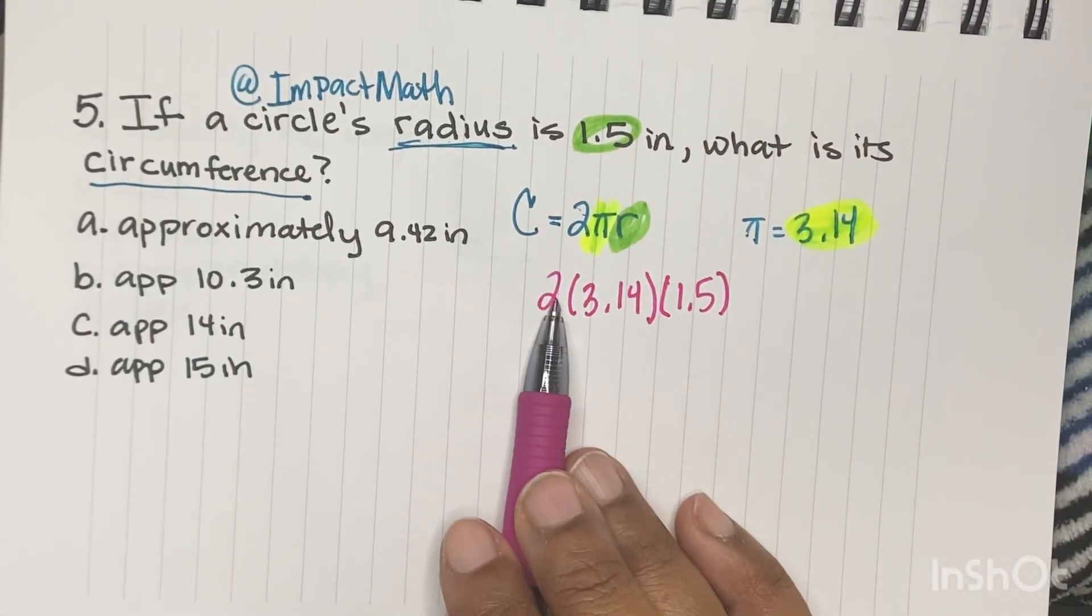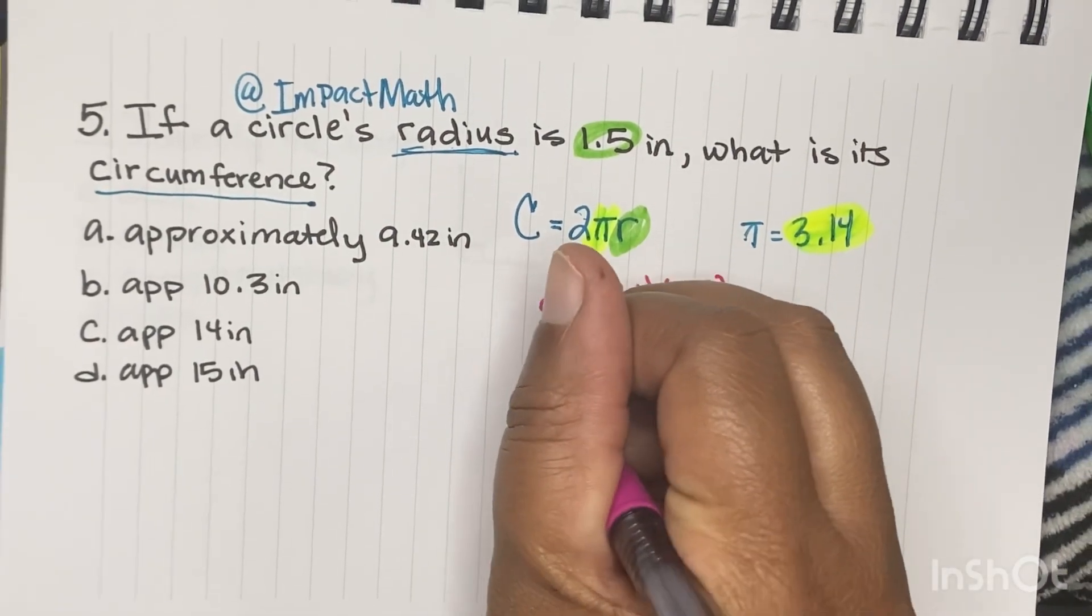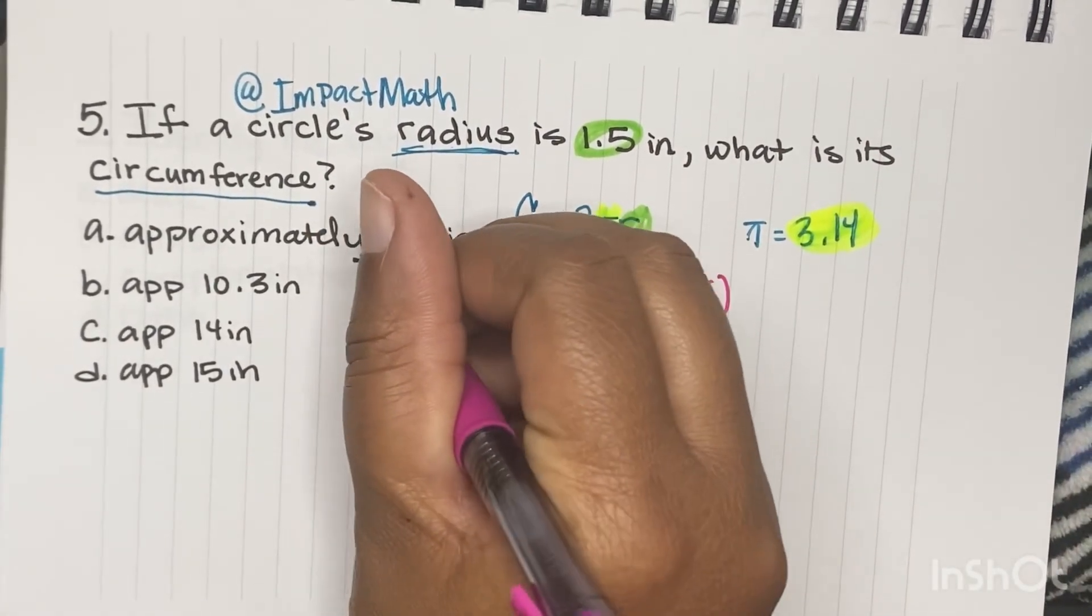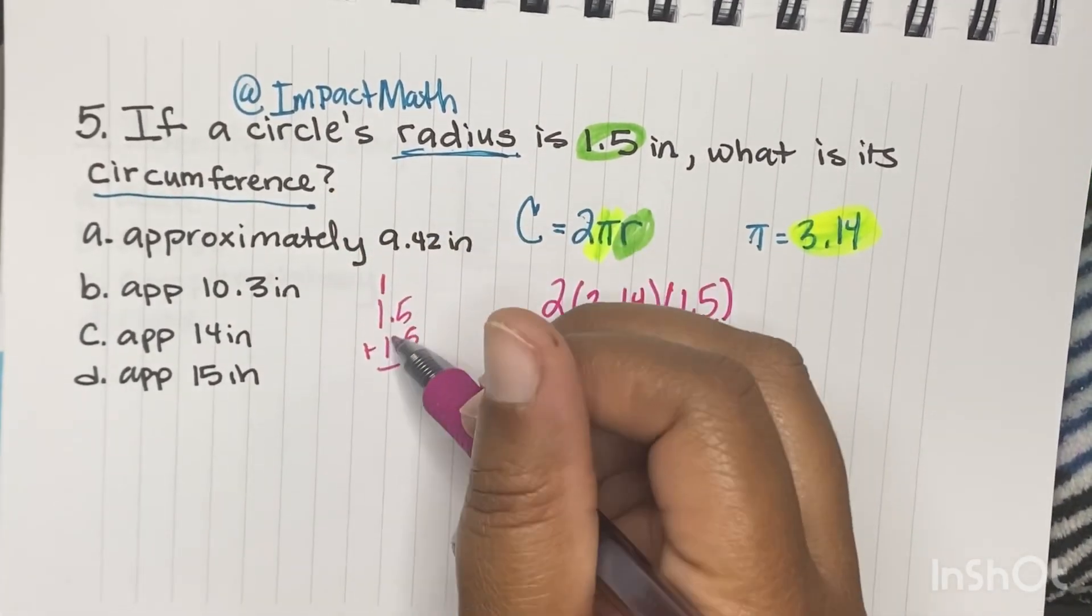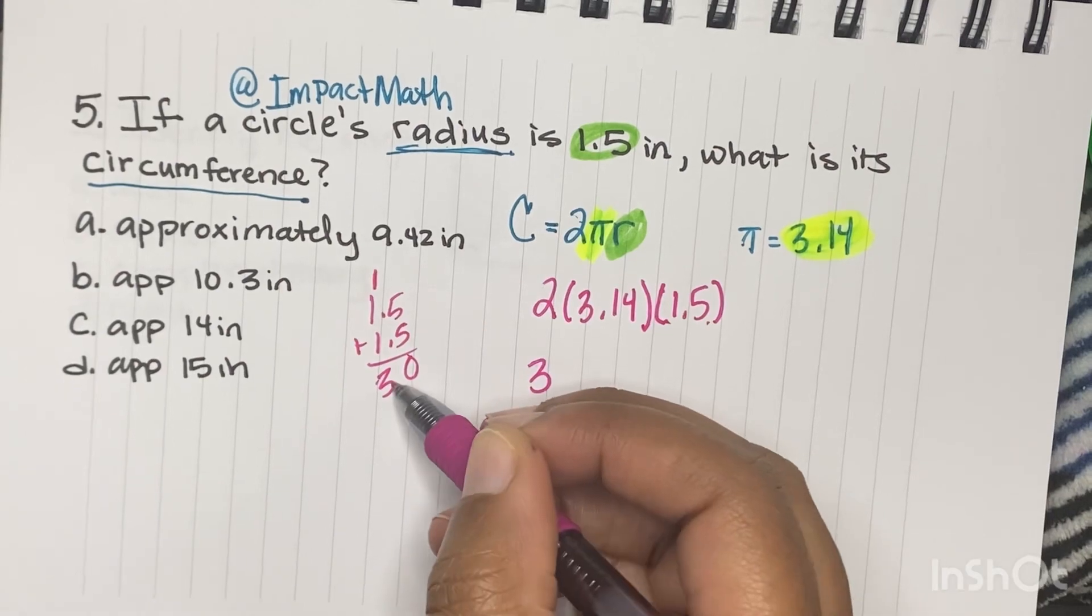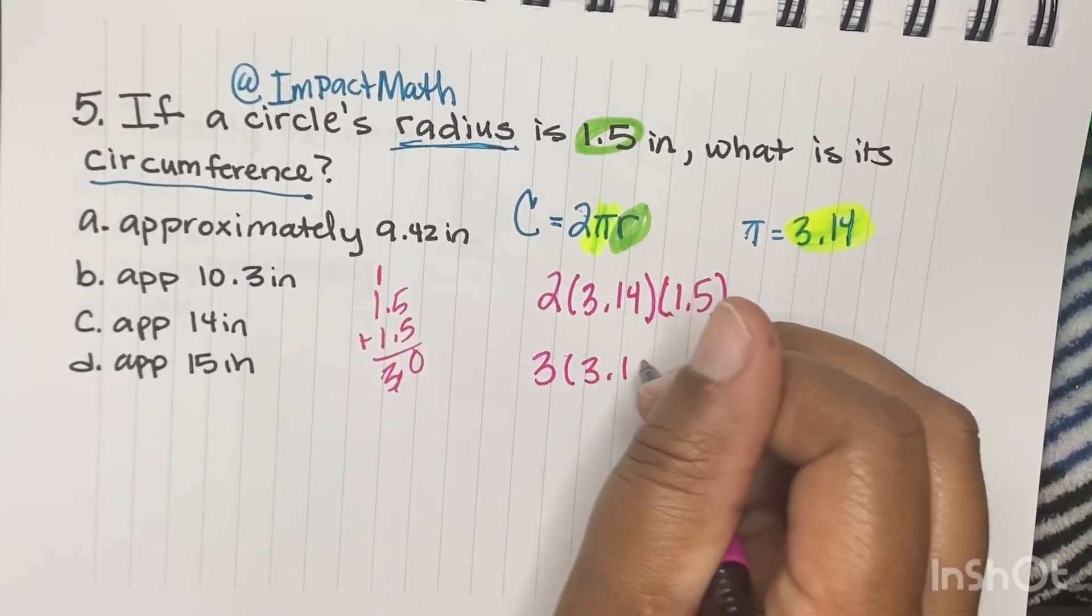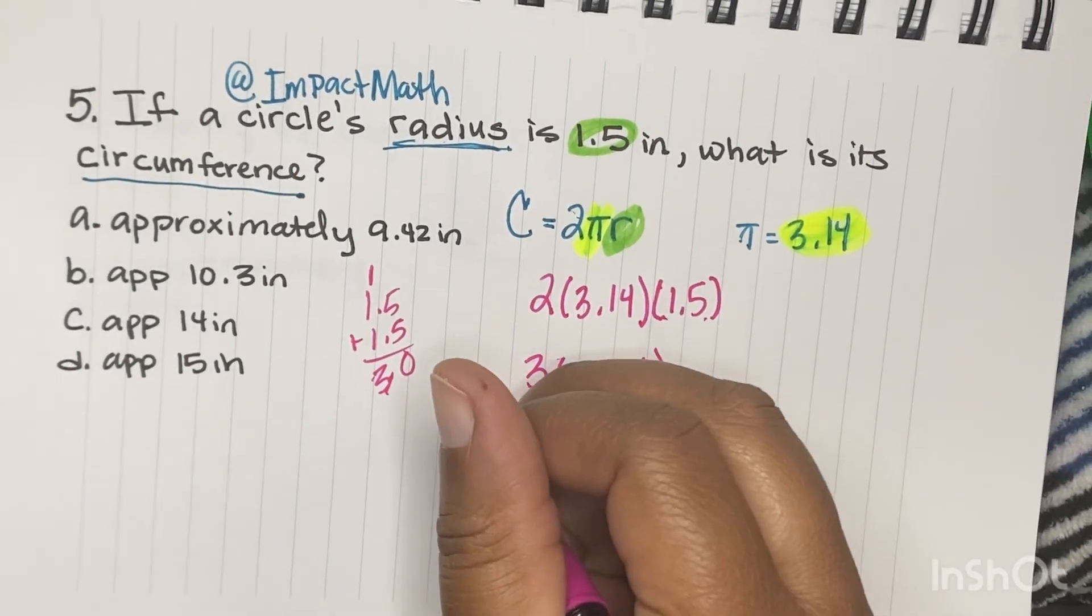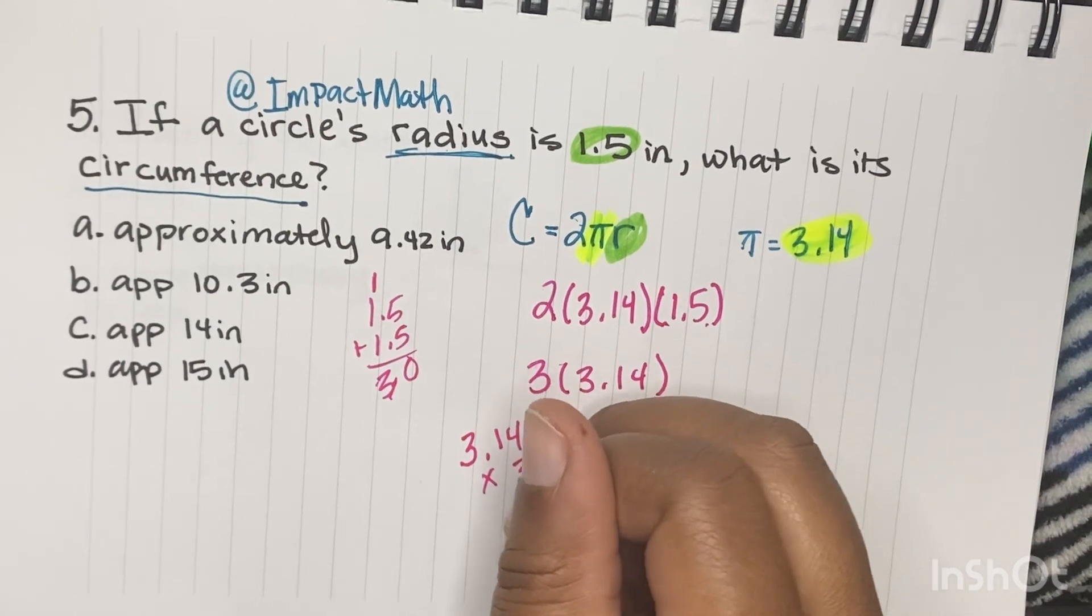And we're going to multiply 2 times 3.14 times 1.5. Well, 1.5 doubled, think of it $1.50. If you double it, it's 3. Or you could do 1.5 plus 1.5. You get 10, carry the 1, and that's why you get 3. So it's 3 times 3.14.